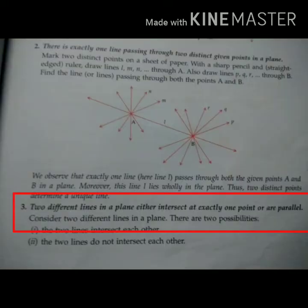Two different lines in a plane either intersect at exactly one point or are parallel. It means the two lines in a plane either intersect each other or they are parallel lines.